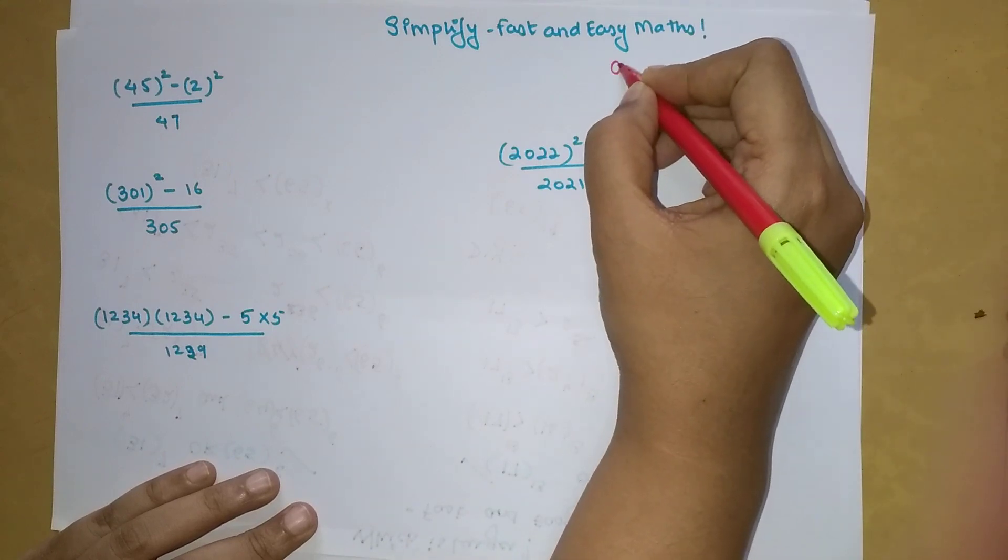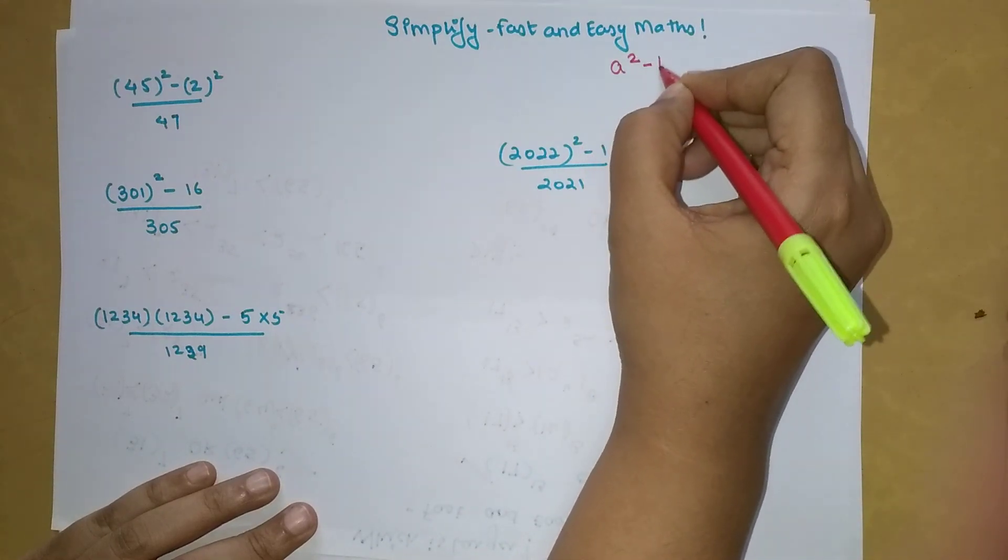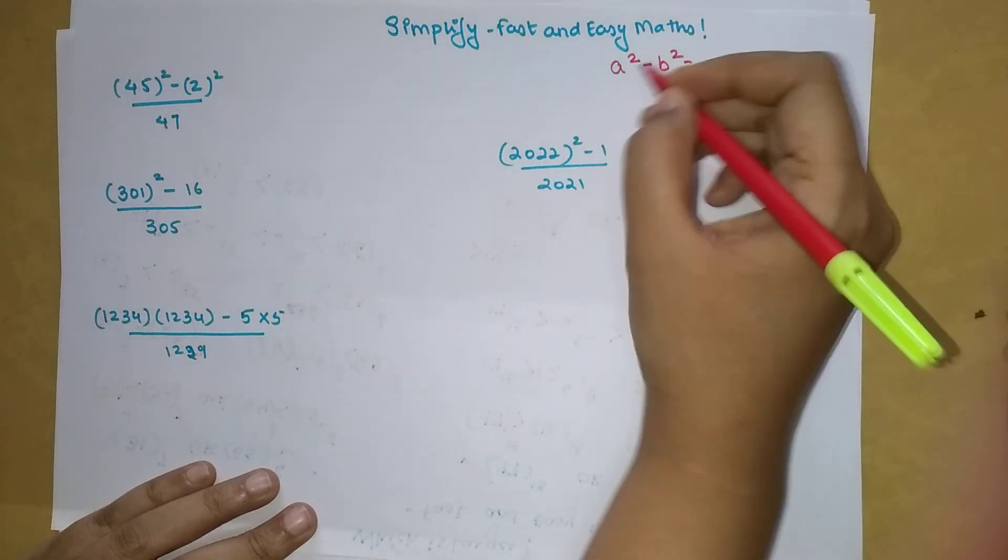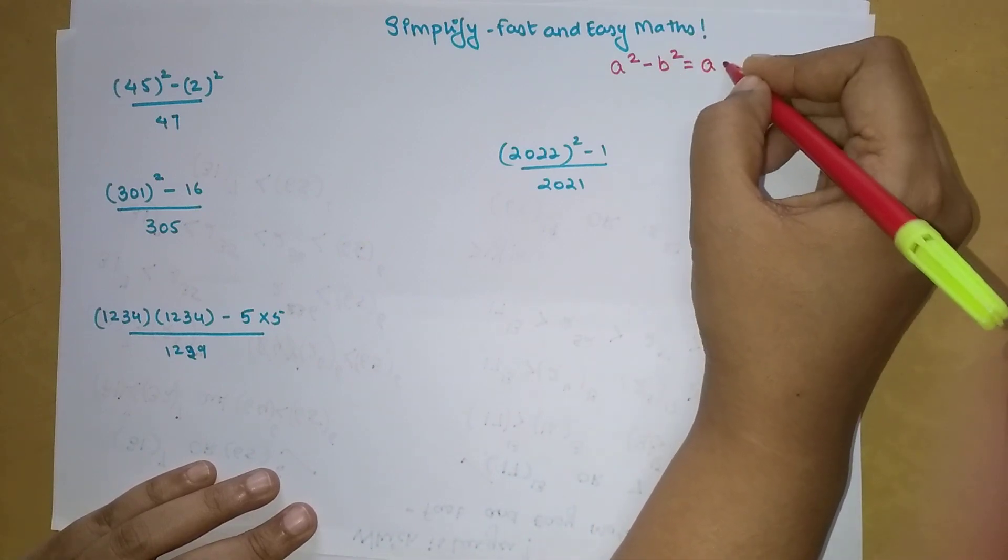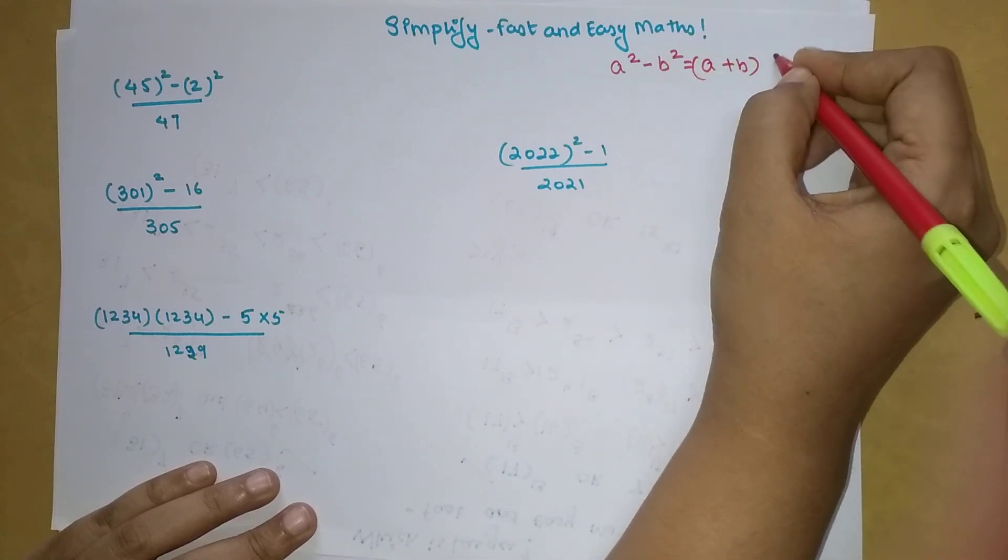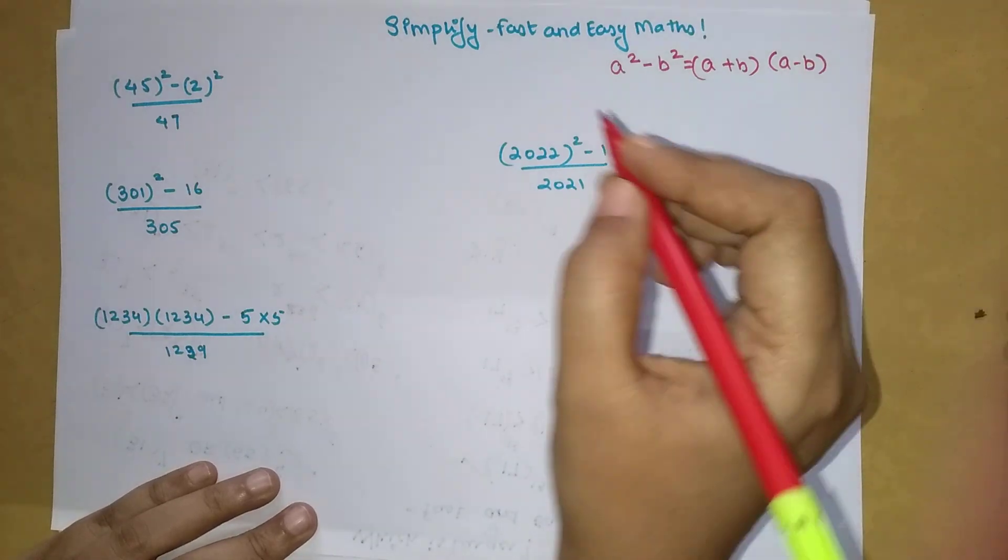So the formula is very simple: A square minus B square. Whenever you have something like this, you can write this in form of A plus B into A minus B.